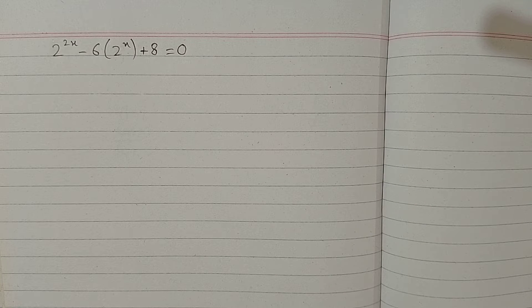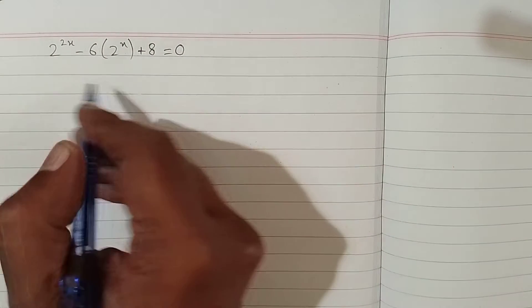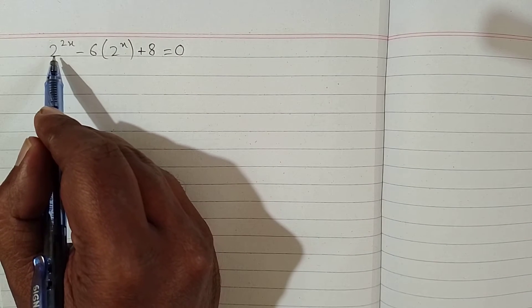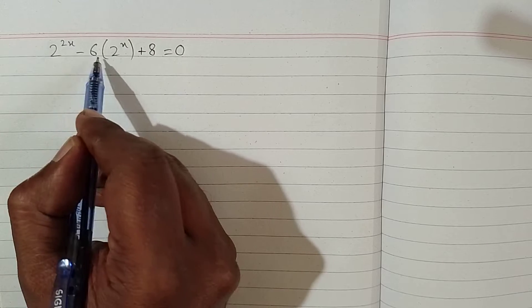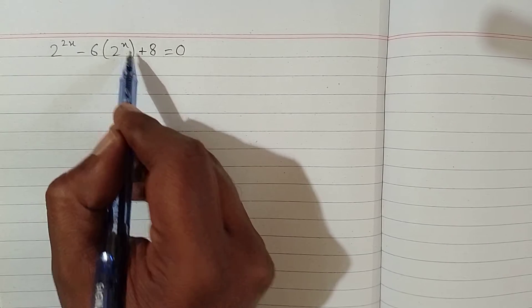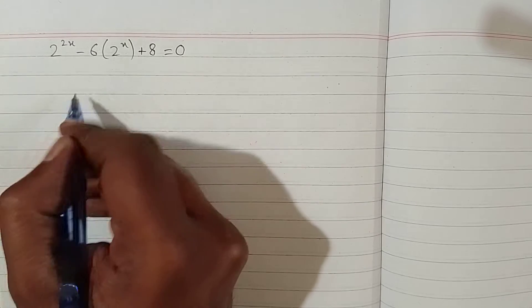In this video we will solve an exponential equation reducible to a quadratic equation. We have 2 raised to the power 2x minus 6 times 2 raised to the power x plus 8 is equal to 0.